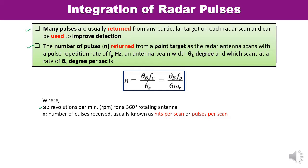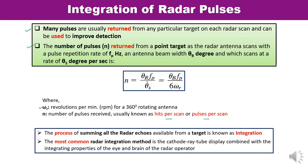Integration of pulses is nothing but summing. Integration is the summation of all the radar echoes received from the target, and various techniques are used for this. The process of summing all the radar echoes available from a target is known as integration. The most common radar integration method is the cathode ray tube display combined with the integrating properties of the eye and brain of the radar operator.